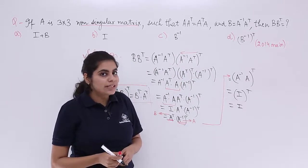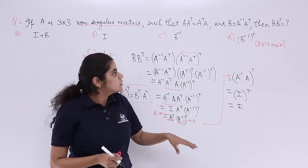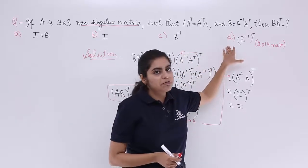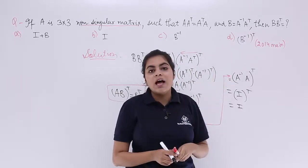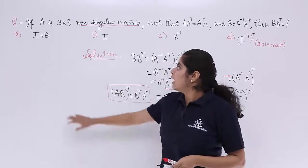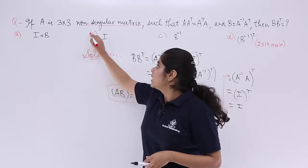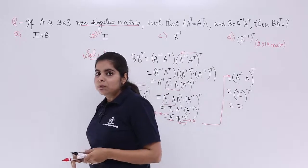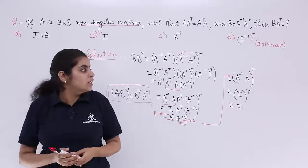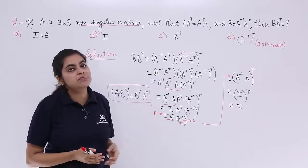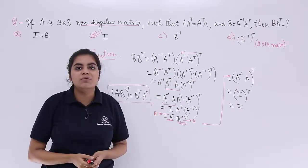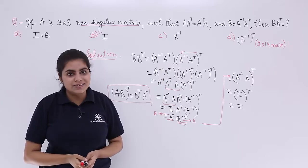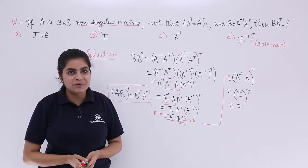So the answer is the identity matrix I. Looking at the options, C and D definitely do not match. The answer is I, which is option B. The 2014 JEE Main exam problem has the answer I — the identity matrix.